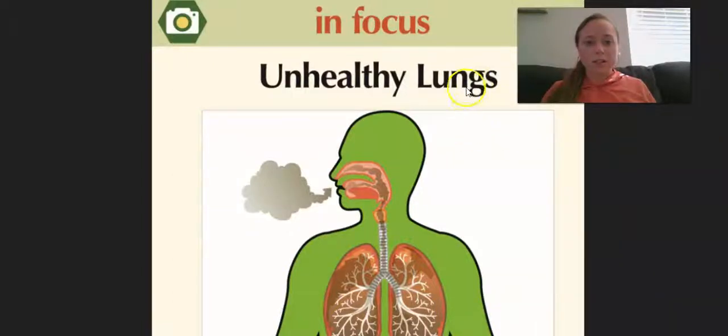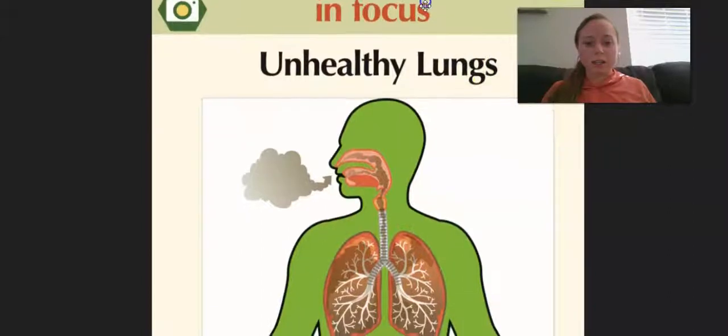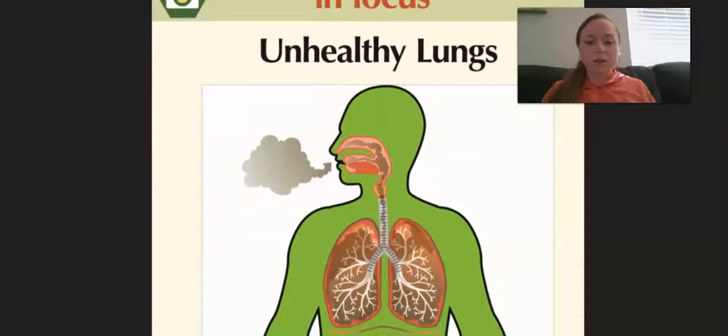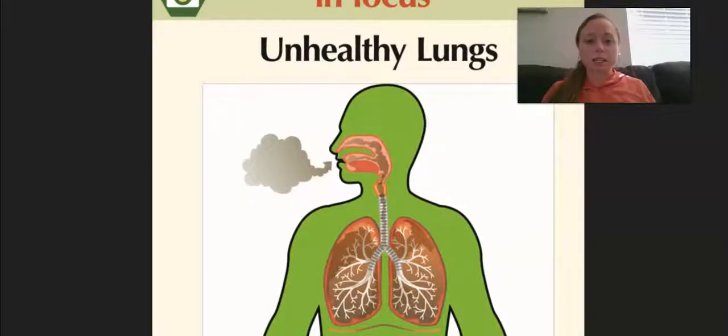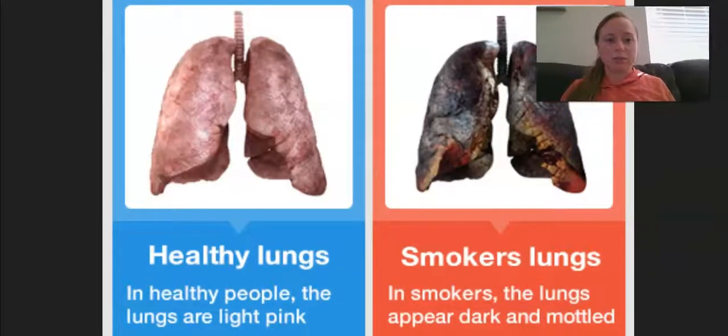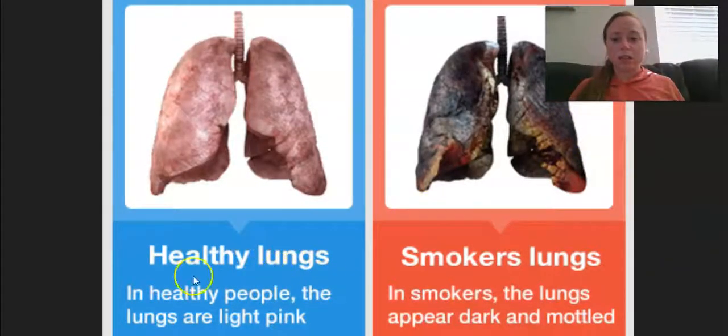These are unhealthy lungs. Harmful chemicals can damage the lungs. Look at the smoke going in and look at how these lungs are supposed to be nice, pink and clean looking, and they have smoke and toxic chemicals inside of them. Here's another example. These are healthy lungs that are light pink in color, and these are smokers lungs. They're dark in color.